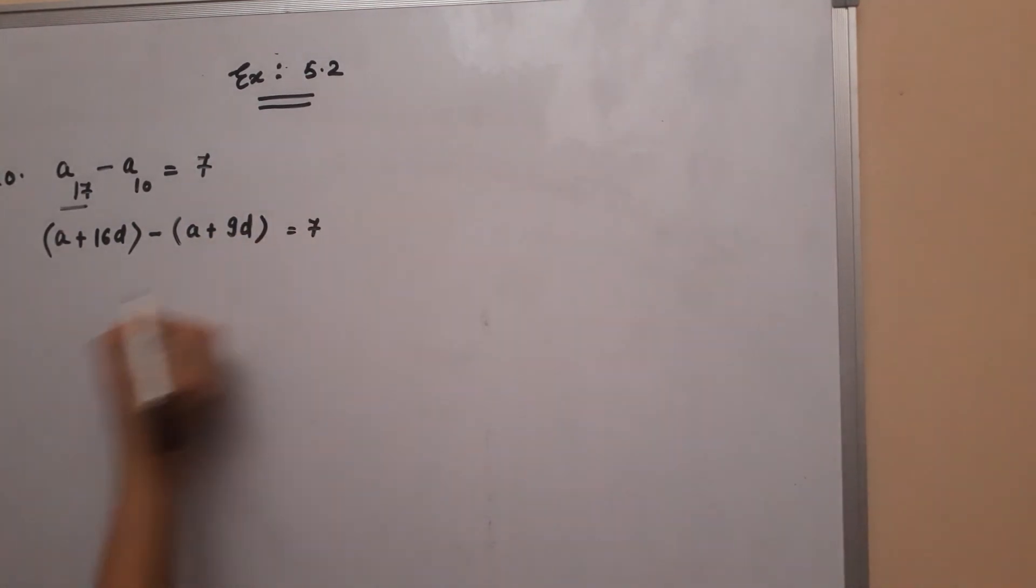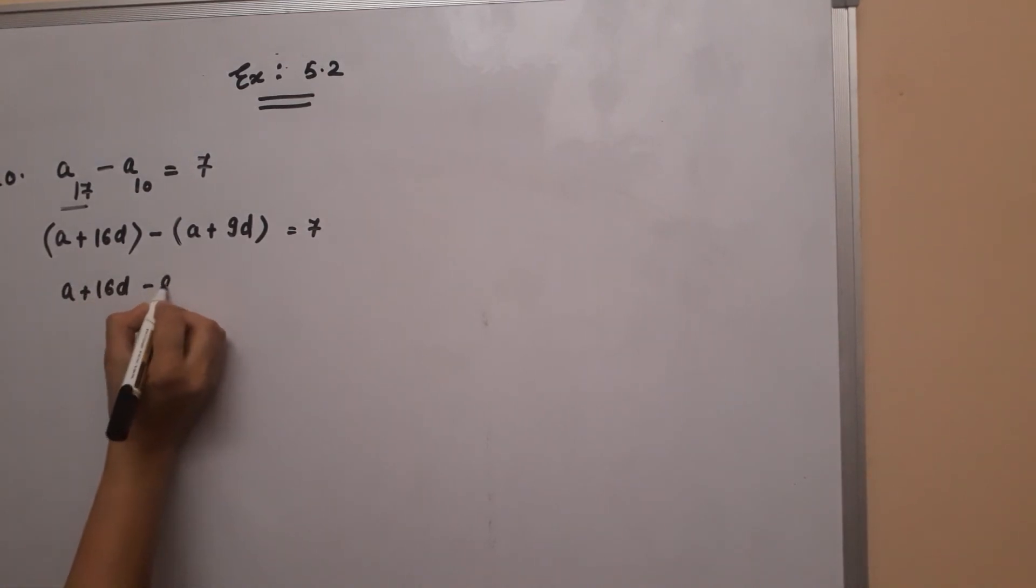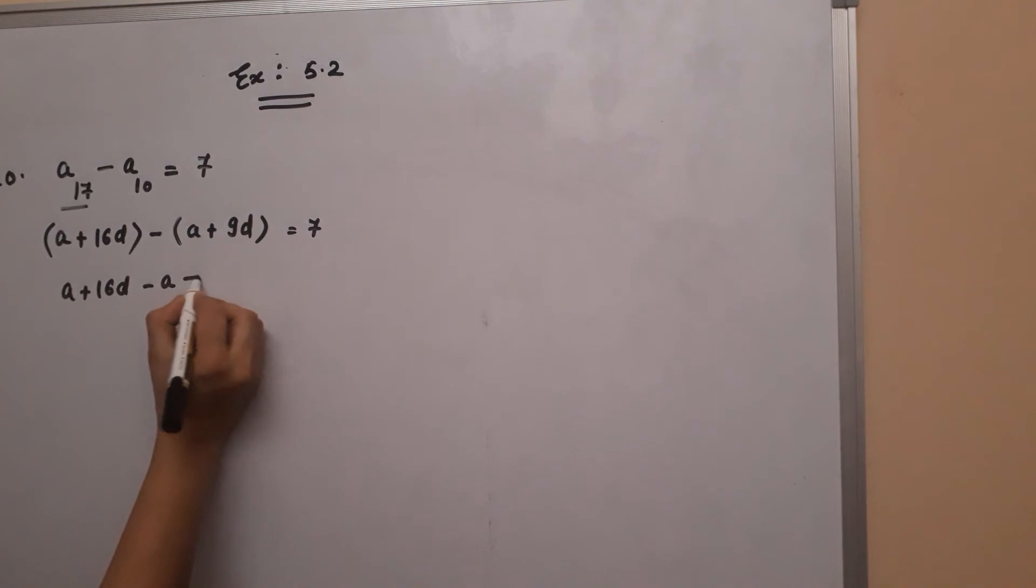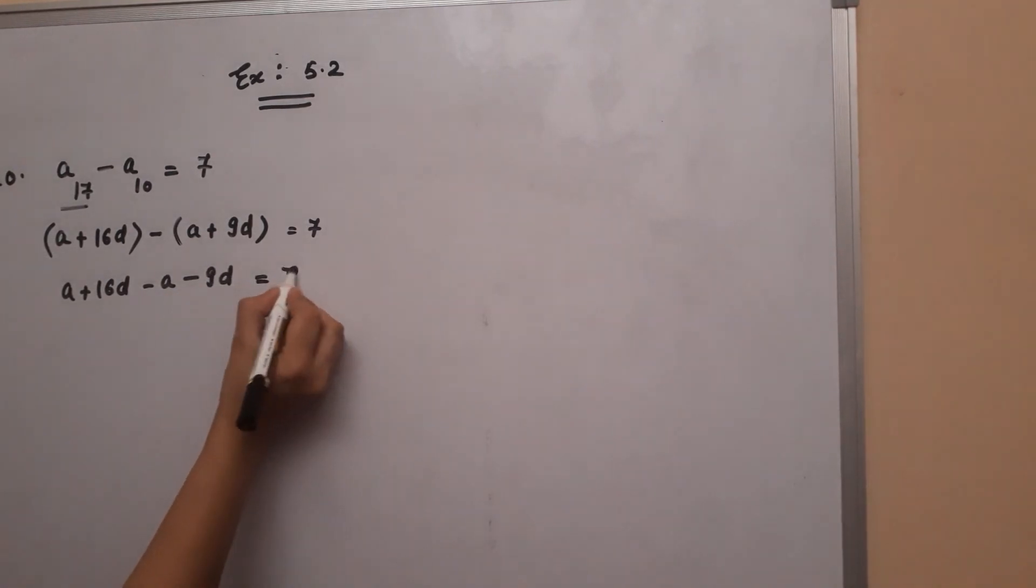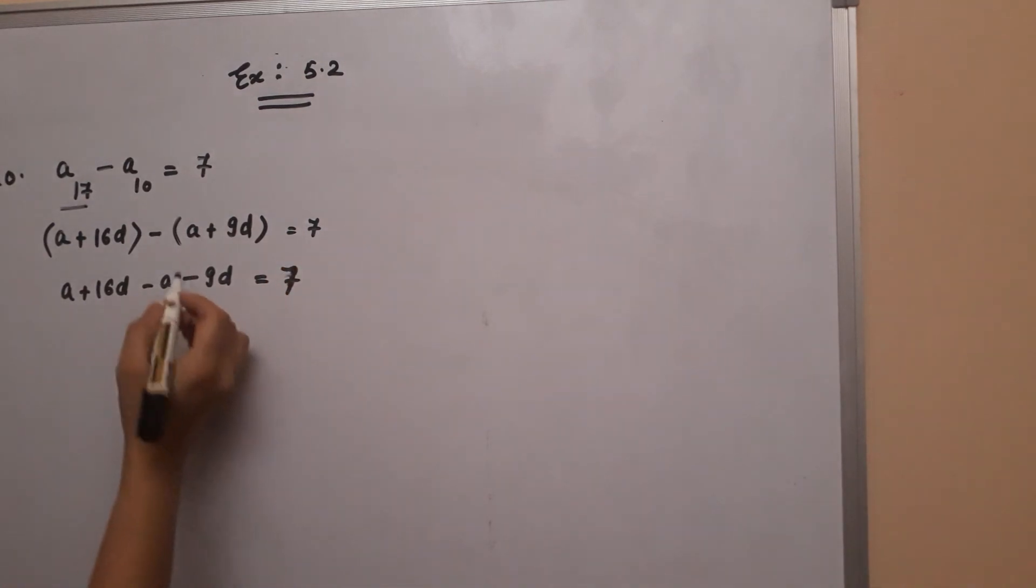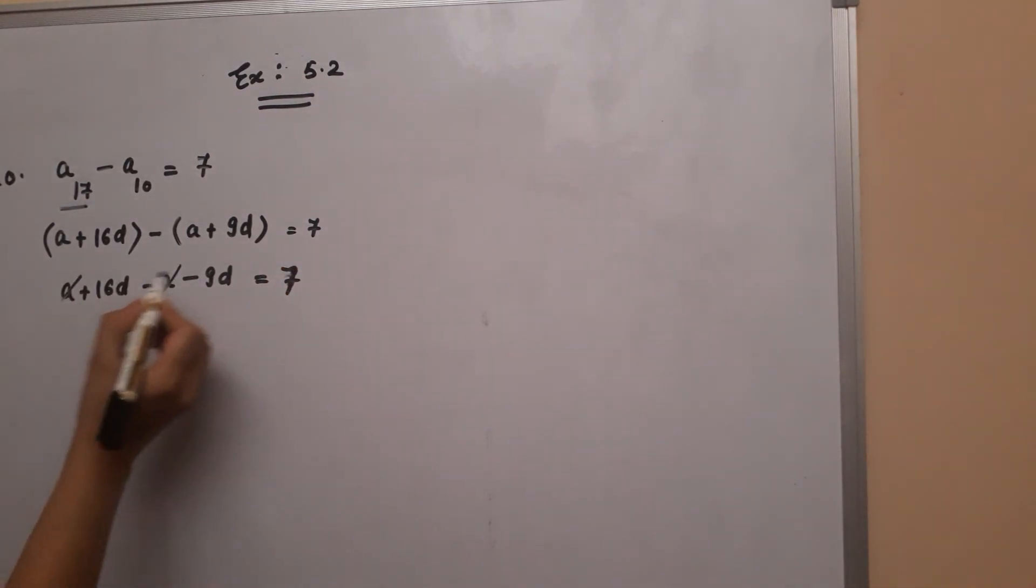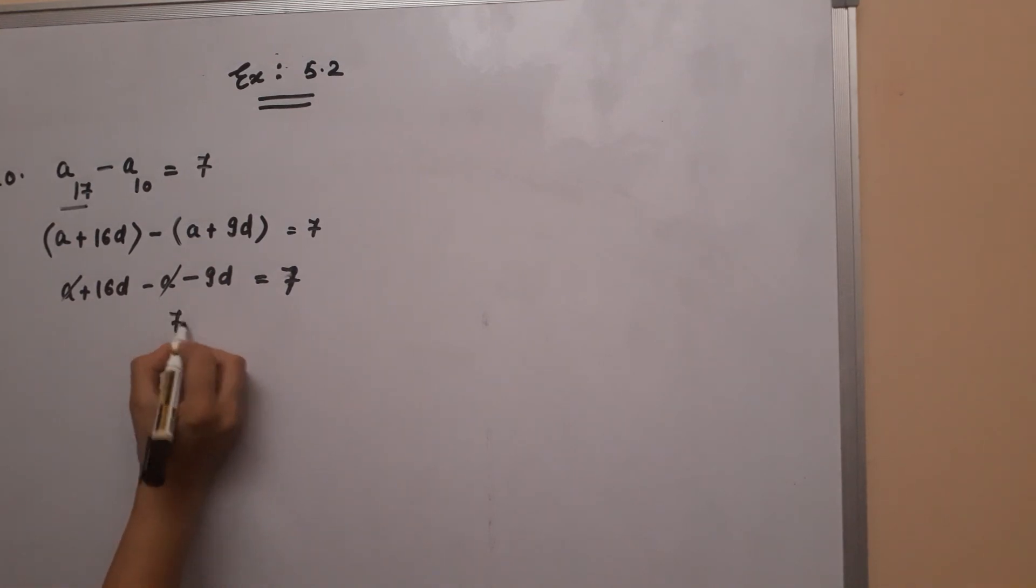Now, A plus 16D minus A. The sign will be changed, so minus 9D equals 7. A and A will be cancelled out, and 16 minus 9 gives you 7D.